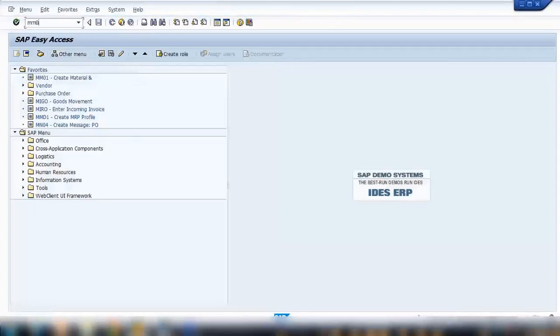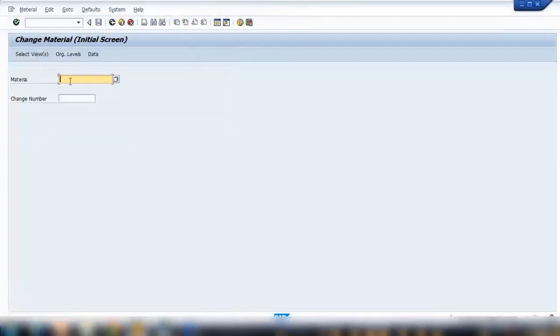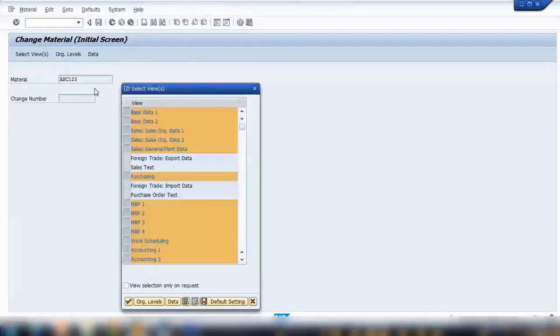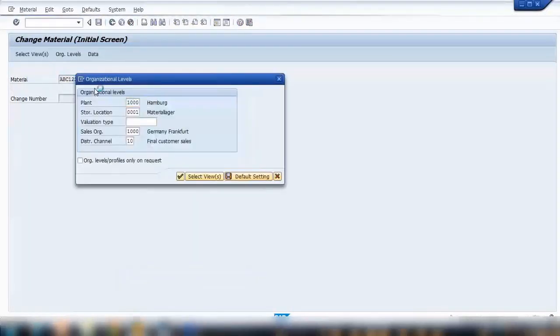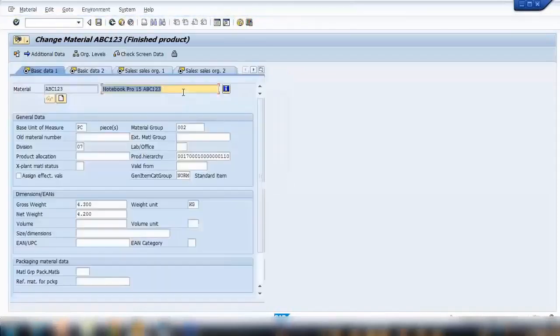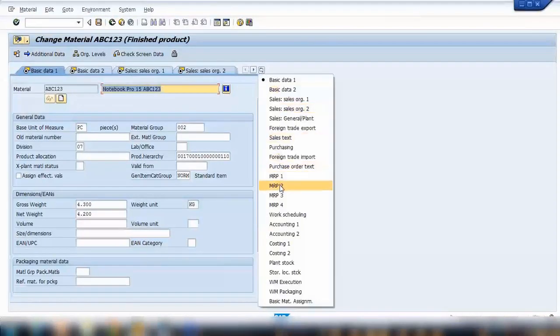So if I go to MM02, and we created some material earlier, I'll call an ABC Material. I'll show you where you mentioned whether the product is in-house manufactured or external procurement.